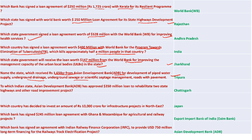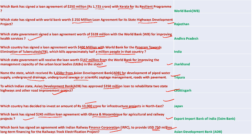Tripura received 1,650 crore from ADB for development of piped water supply, underground drainage, underground sewage, and scientific septage management. Chhattisgarh received ADB's approval for a 350 million dollar loan to rehabilitate state highways. Japan decided to invest 13,000 crore for infrastructure projects in Northeast India. Export-Import Bank of India signed 245 million dollar loans to Ghana and Mozambique for agriculture and railway projects. Asian Development Bank signed an agreement with Indian Railway Finance Corporation to provide 750 million dollars in long-term financing for railway track electrification.